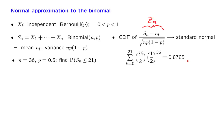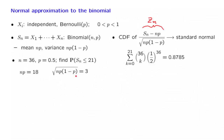Now let us proceed using the central limit theorem. We are interested in this probability, and we will use the fact about the CDF of the related standardized random variable. The first step is to calculate n times p, which is 18. The second step is to calculate the denominator — the standard deviation — which evaluates to 3.